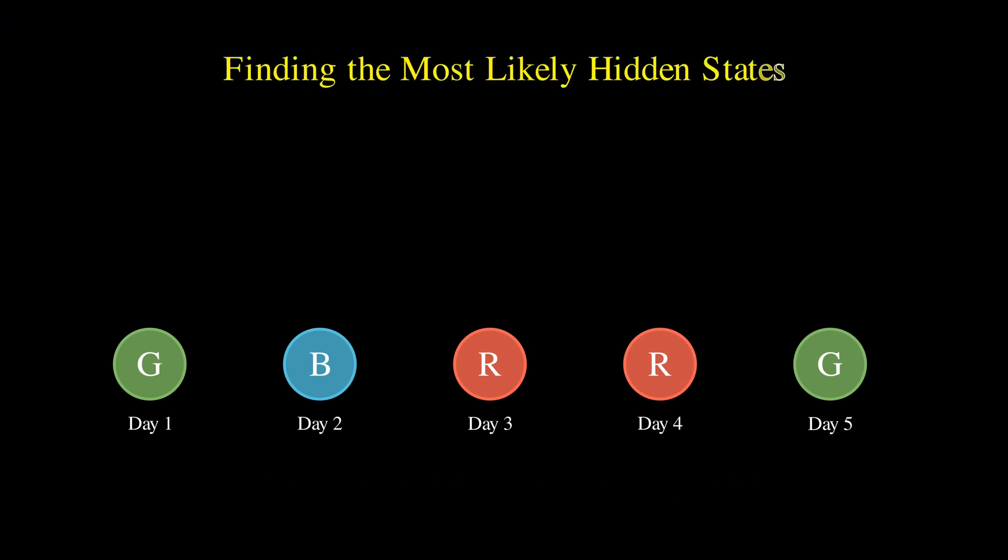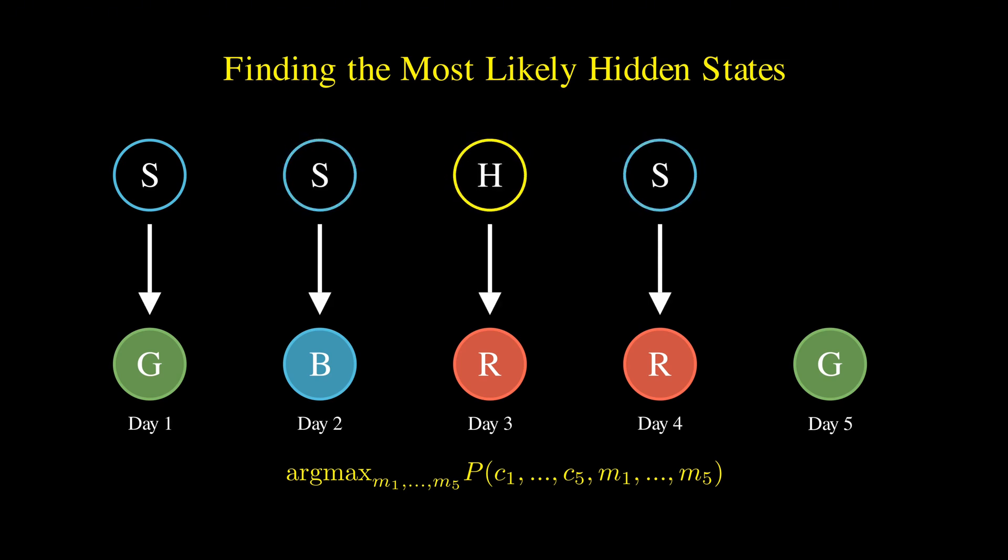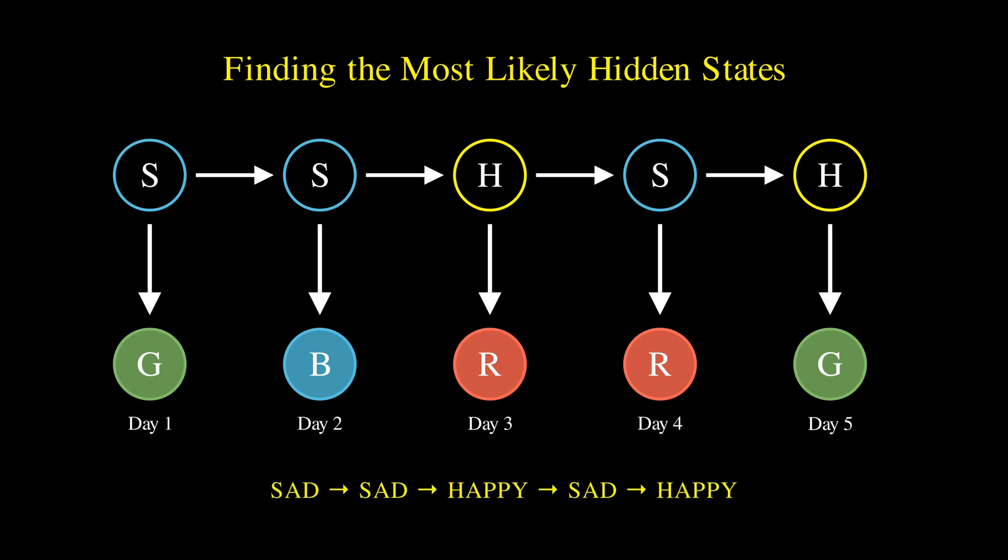Mathematically, we are trying to find a sequence of modes M1 through M5 that maximizes the probability of our observed colors C1 through C5 and the modes M1 through M5, which is the joint probability of the modes and colors. After running our inference algorithm, we could find, for instance, that the most likely hidden state sequence is sad, sad, happy, sad, and happy again. Then, this sequence would explain our observed data based on the transition and emission probabilities we defined, and it's calculated efficiently using the Viterbi algorithm. And we'll talk in-depth about that in the incoming videos.